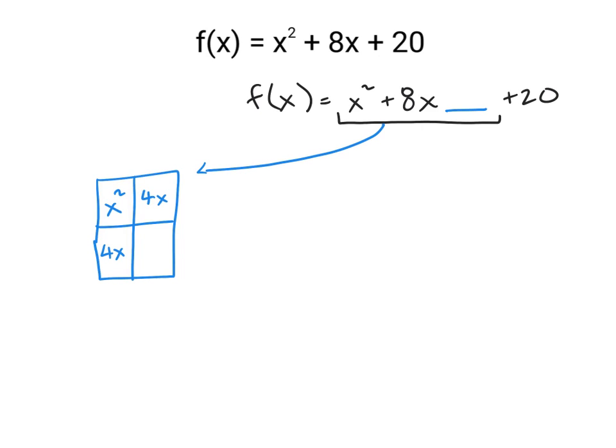Now we can start to fill out the factors: x and x, plus 4 and plus 4. We want to complete this square. We want to find that last term that will go in to make this a perfect square.